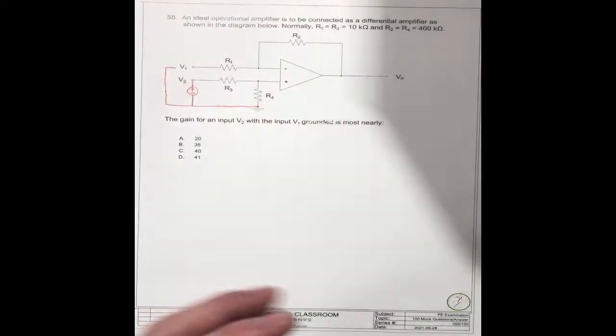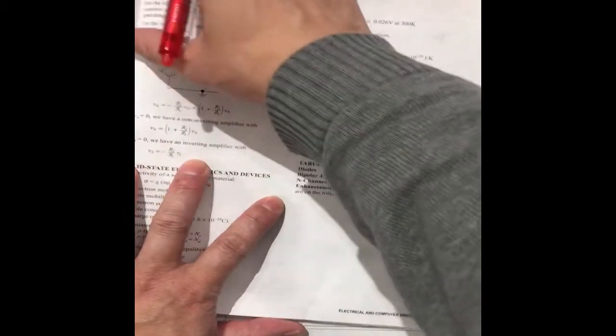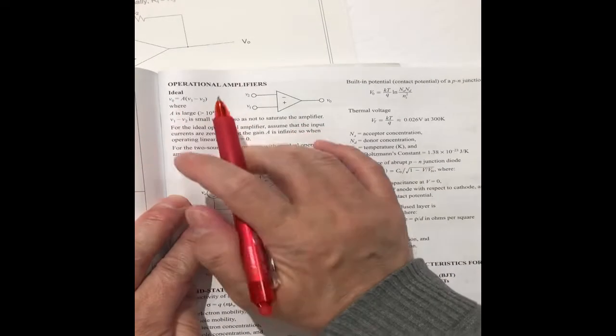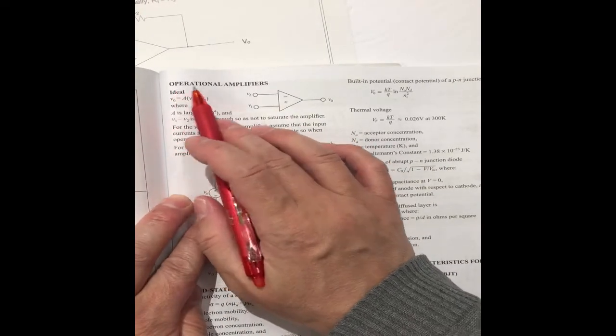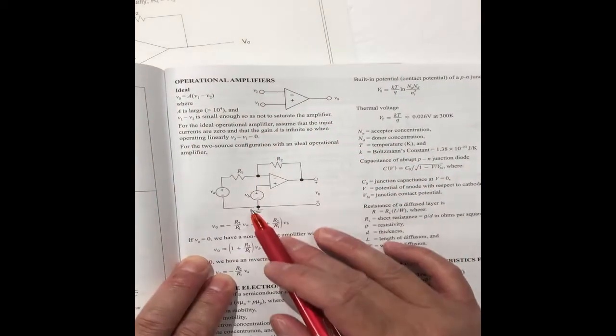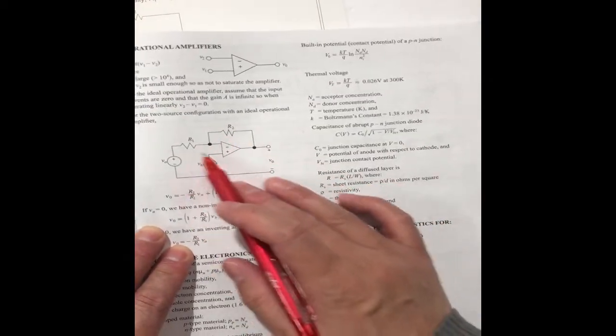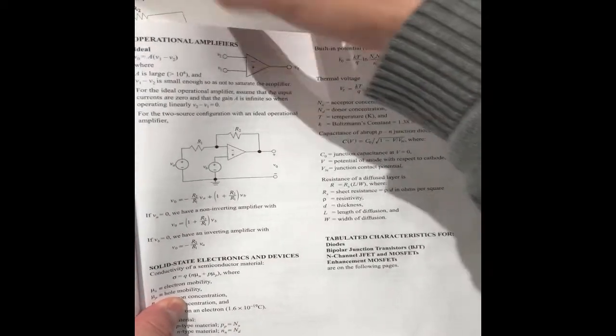So we check the book on page 209. This is the part of the ideal operational amplifier. This is the diagram. You can check the diagram here.